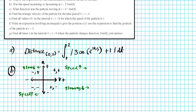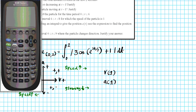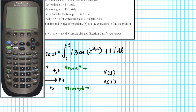In Part B, was the speed increasing or decreasing at t = 1? We just need to know the sign of velocity and acceleration at that specified time. So we just have to evaluate v(1) and a(1). I'm going to enter these into the graphing menu. There are other ways this can be done, but one way is by evaluating with a graph.